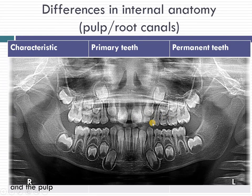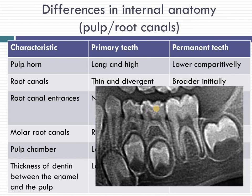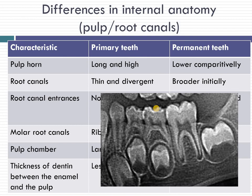Looking at the pulp chamber configuration: the pulp horns in deciduous teeth are much sharper and more highly placed compared to permanent teeth. In permanent teeth there is a lot of dentine space, so when preparing a cavity you don't have to worry about exposing the pulp horn. Whereas in deciduous teeth there is a higher chance of pulp horn exposure. The root canals are thin and divergent in deciduous teeth, following the flaring roots. In permanent teeth the canals are broader at the coronal pulp contact and become narrower at the apical portion.